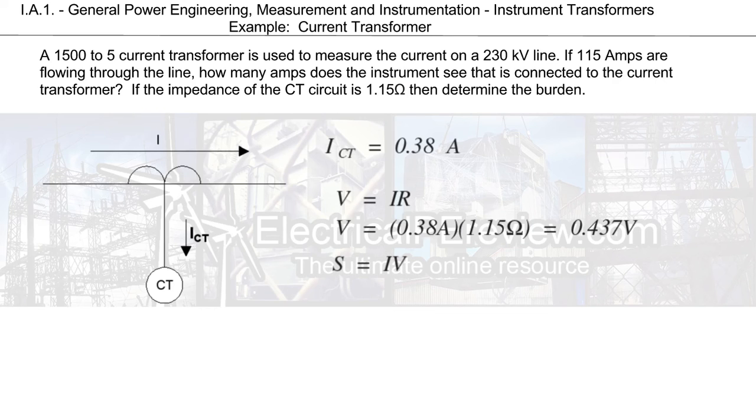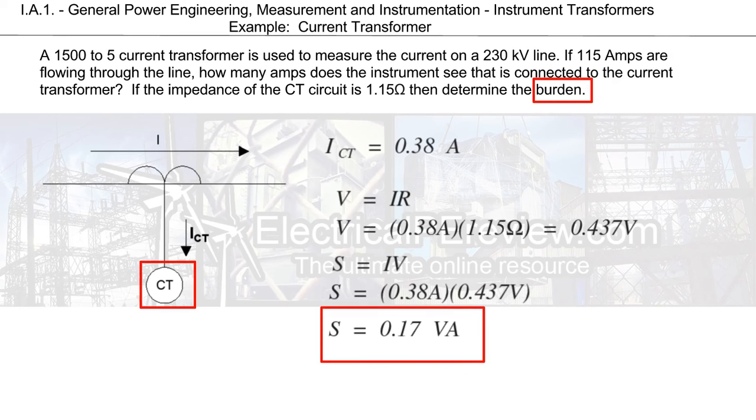Using this information, we can use a standard power formula to plug it in. Solving for current and volts gives us a total of 0.17 volt amps. Now I know what you're thinking, typically when we multiply voltage and current, we're left with watts. However, CT burdens are always almost exclusively expressed in volt amps, so remember that.